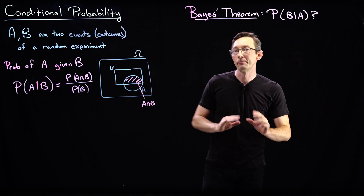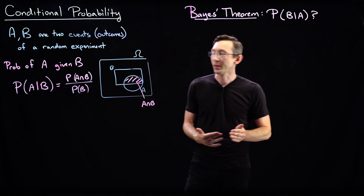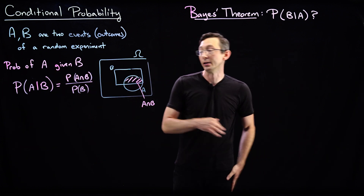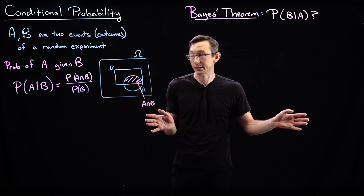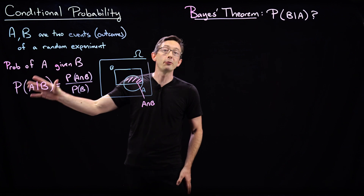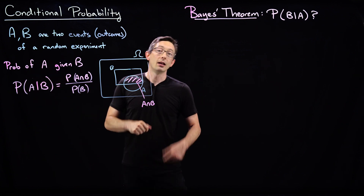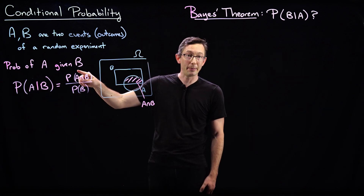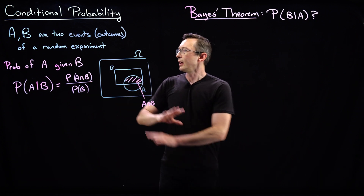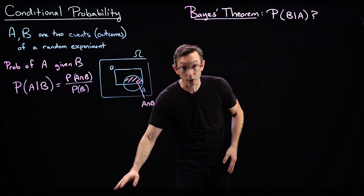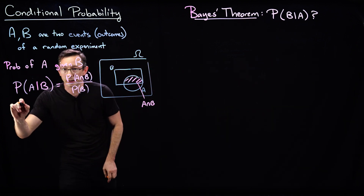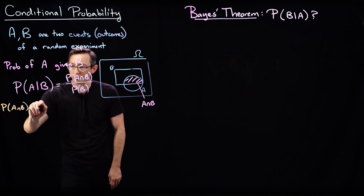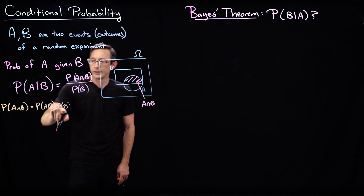We introduce the notion of conditional probability. Maybe I'm trying to compute the probability of event A happening, but I have some additional partial information about event B, some other event that could have happened. I can update or improve my estimation of the probability of A happening given that I know B also happened. So the probability of A given B is the probability that both things happened divided by the probability that event B happened. We can also write that the probability of A and B equals probability of A given B times probability of B — this is just the multiplication law.